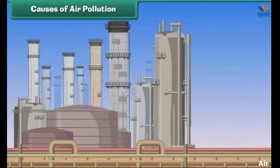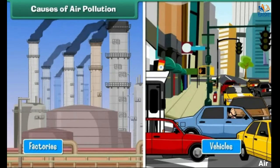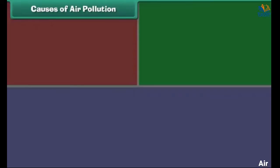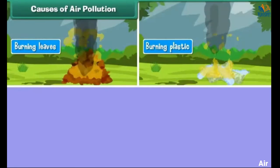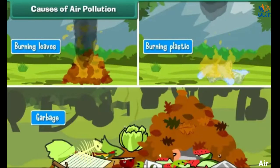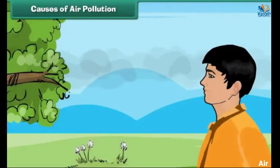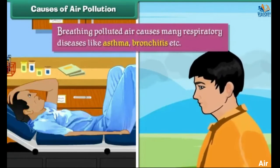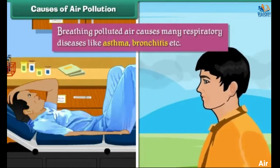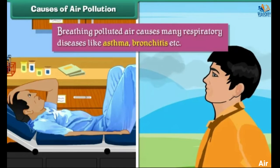Causes of Air Pollution: Air gets polluted by the smoke released by factories and vehicles. Burning leaves, plastic and garbage also produces smoke and pollutes the air. Breathing polluted air causes many respiratory diseases like asthma, bronchitis, etc.